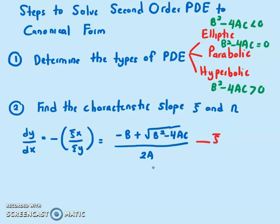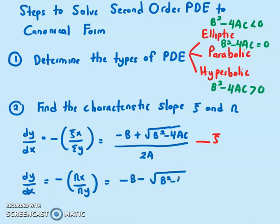Which is also given by negative B plus square root of B squared minus 4AC over 2A. This is equation for psi, and then the second one, dy/dx which is equals to negative eta_x over eta_y which is given by negative B minus square root of B squared minus 4AC over 2A.